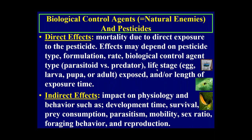There are direct effects — mortality due to direct exposure to the pesticide — which depend on pesticide type, formulation, rate used, biological control agent type (parasitoid or predator), life stage exposed (egg, larva, pupa, or adult), and length of exposure. Then there are indirect effects, which impact physiology and behavior: developmental time, survival or longevity, prey consumption, parasitism, mobility, sex ratio, foraging behavior, and reproduction.